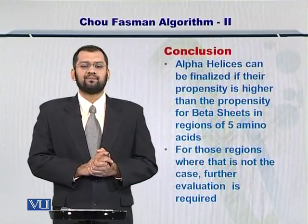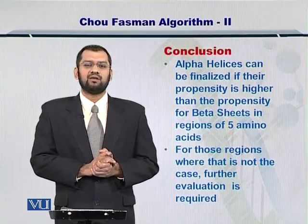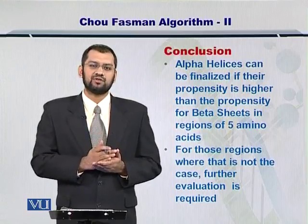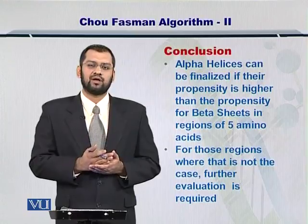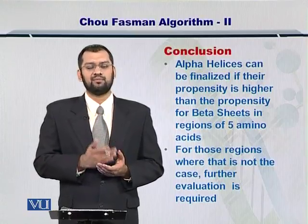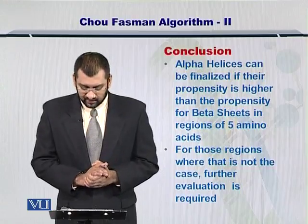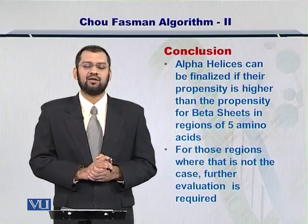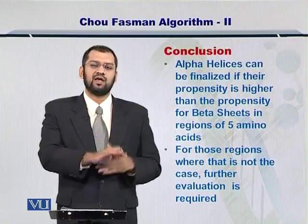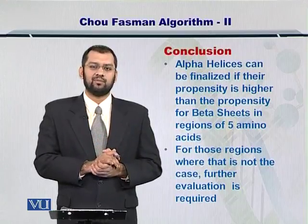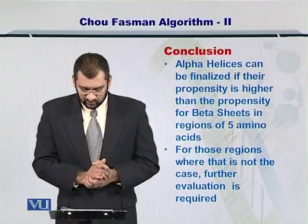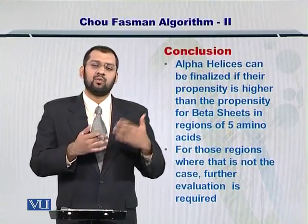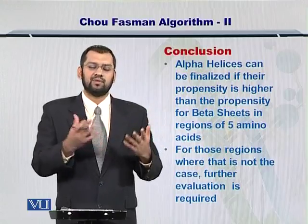In conclusion, remember why we select five amino acids in this case: for formation of a beta sheet, you require at least five amino acids to initiate one. Therefore, alpha helices can be finalized if their propensity is higher than the propensity for beta sheet formation across five neighboring amino acids. For regions where that is not the case, further evaluation is required to determine whether they form a beta sheet, a turn, a loop, and so on.